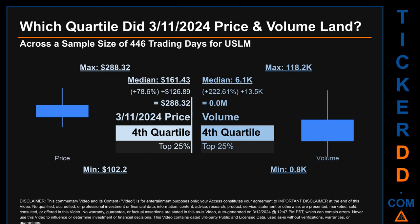Hello, my name is Maria. Which quartile did the March 11, 2024 price and volume land in, across a sample size of 446 trading days? The maximum end-of-day price for USLM was $288.32, while the minimum was $102.20. The March 11, 2024 price of $288.32 landed within the fourth quartile, meaning it was within the top 25 percent of all sampled end-of-day prices.